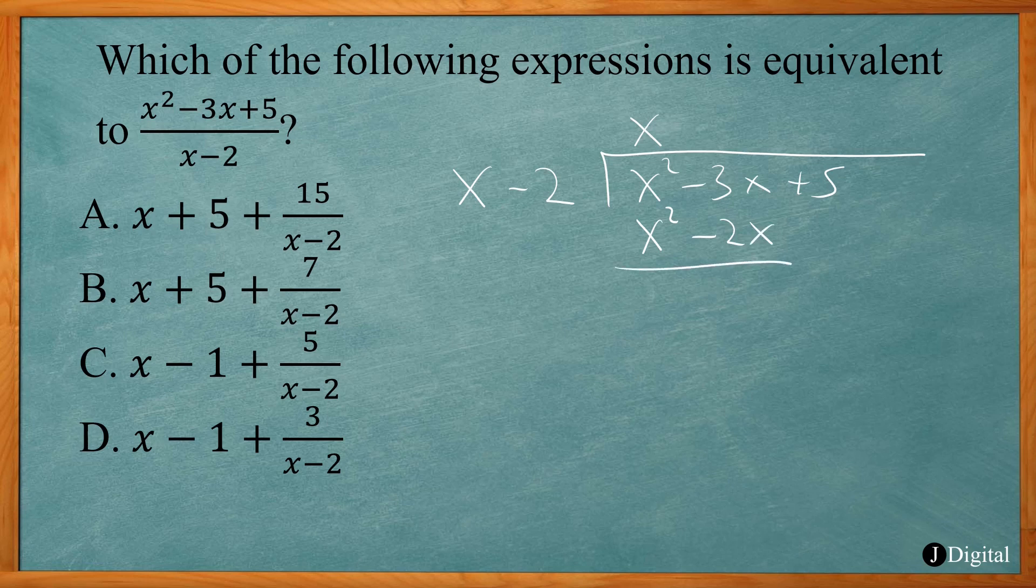Next step is just subtract, so x squared minus x squared is zero. And then negative 3x minus a negative 2x, so it ends up being a plus there—negative 3 plus 2 gives you negative 1, so negative 1x. Then you carry down the 5, so plus 5.